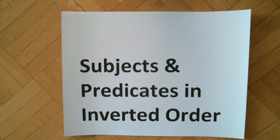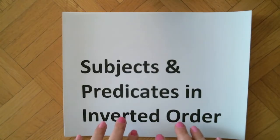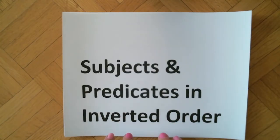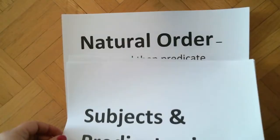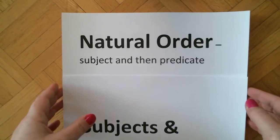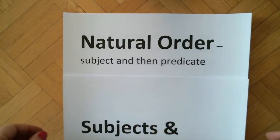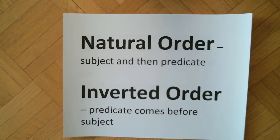Welcome back scholars. Today we are on the subject of subjects and predicates in inverted order. Inverted basically means flipped — that's the easiest way to think about it. You've been learning about sentences in natural order, which means the subject comes first and then the predicate. The alternative is inverted order, where the predicate comes before the subject.